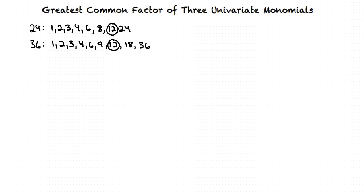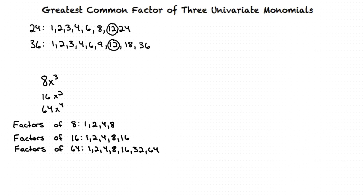Now we're going to learn how to find the Greatest Common Factor of three monomials. We will start with an example problem: find the Greatest Common Factor of these three monomials. When looking for the Greatest Common Factor, we start by listing the factors of the coefficients of each expression. Looking at the factors of each coefficient, we can see that the Greatest Common Factor of these numbers is 8.